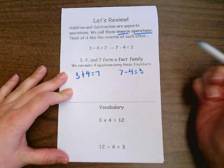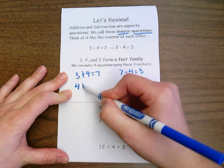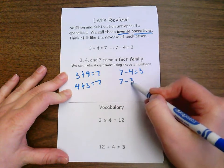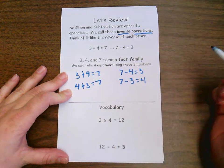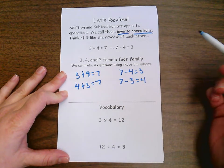There are two more equations that we can make by switching our addends. We can do four plus three equals seven, and we can do seven minus three equals four. Together these four equations form a fact family.